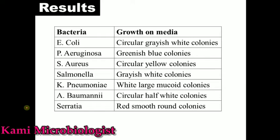Now, results of nutrient agar — how bacteria will look on nutrient agar. Many types of bacteria and fungi can grow on nutrient agar. Here I will mention key pathogens, including ESKAPE pathogens, because they cause every type of infection in both humans and animals, making them highly important in any discussion of culture media. We will also include Salmonella and Serratia.